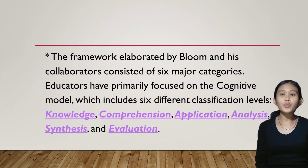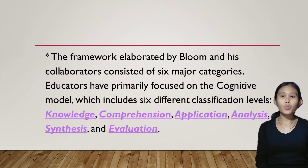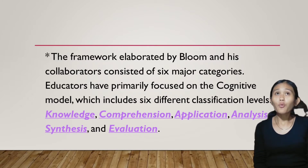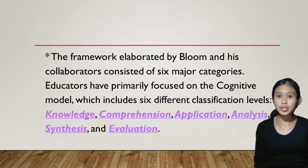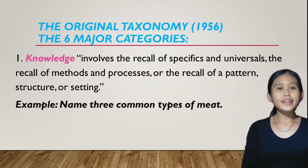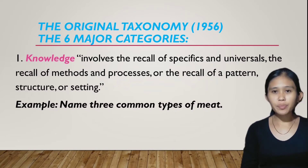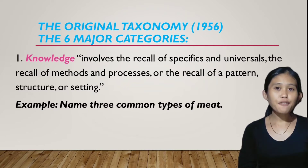The first three elements — knowledge, comprehension, and application — represent lower levels of cognition and learning, while analysis, synthesis, and evaluation are considered higher order skills. Now let's talk about the original taxonomy of 1956.